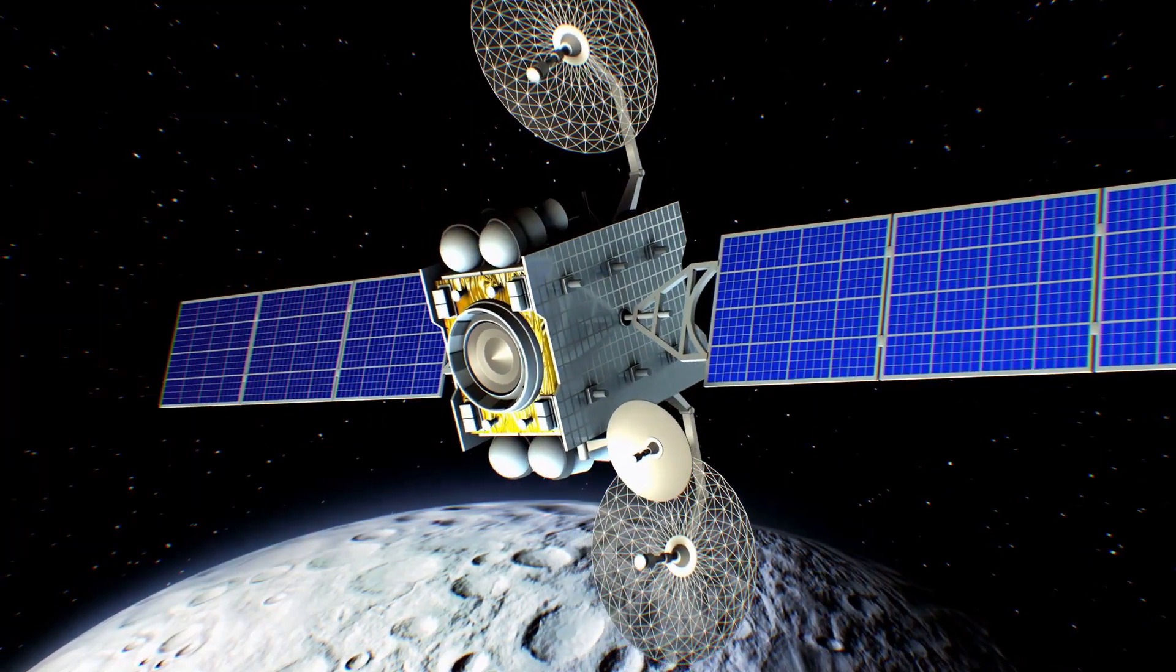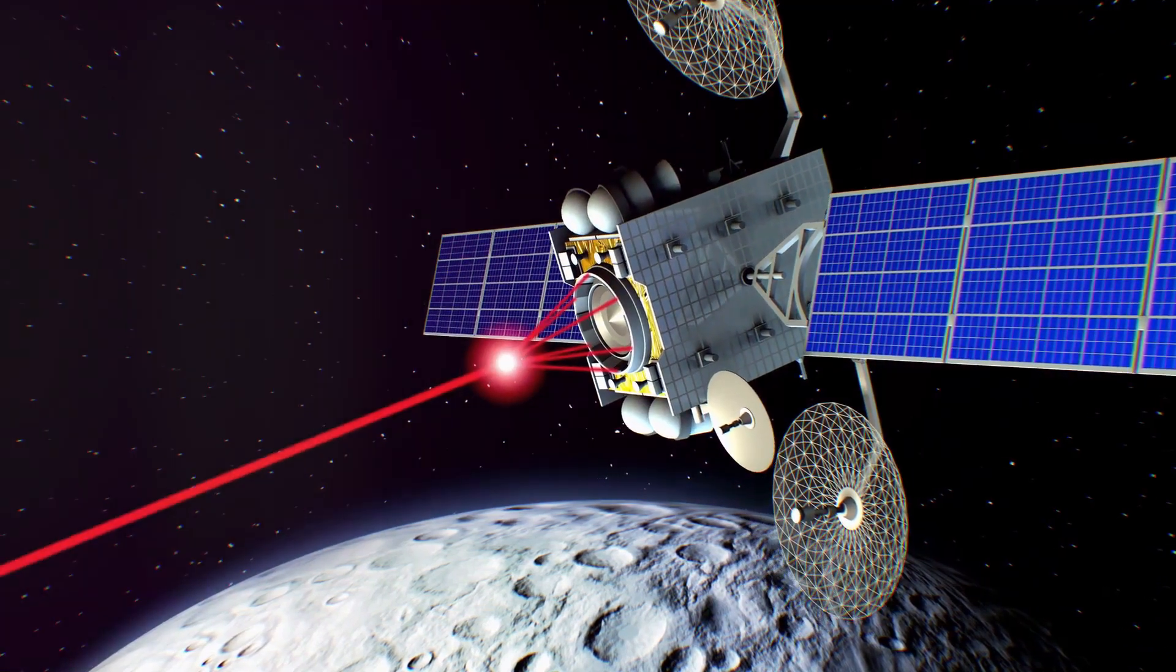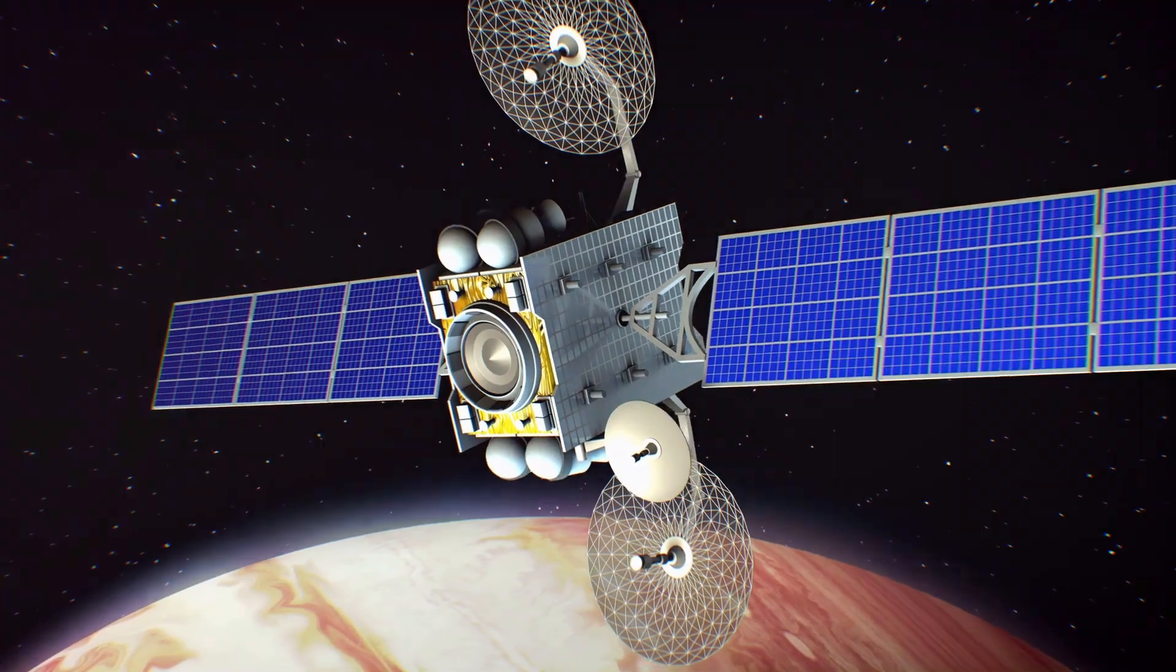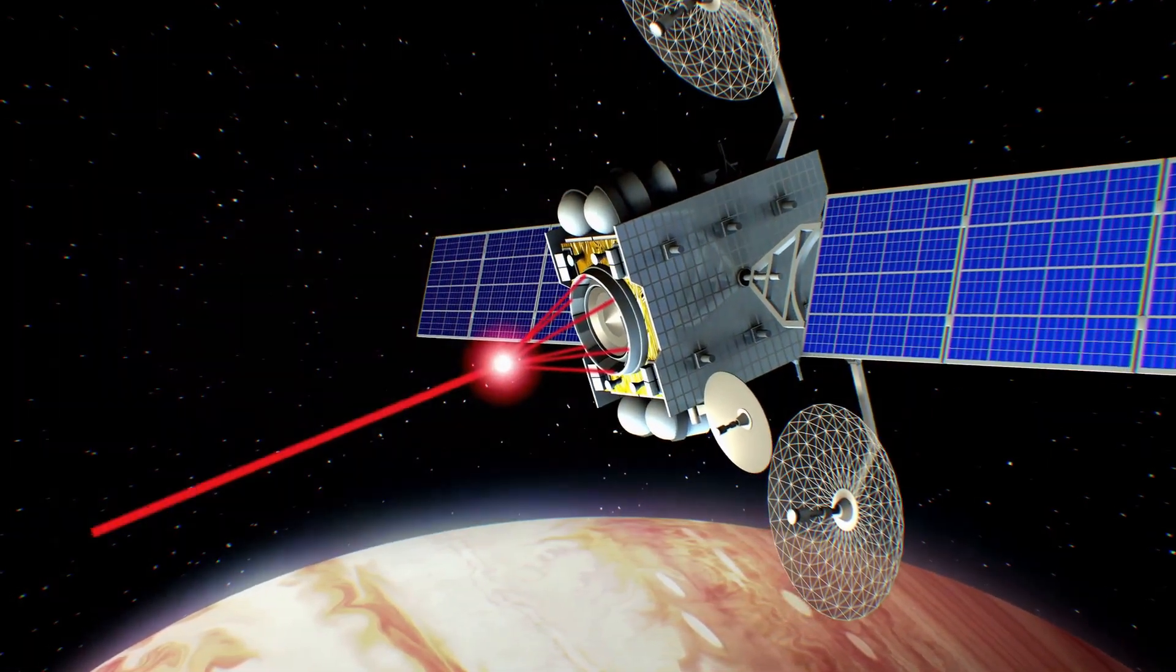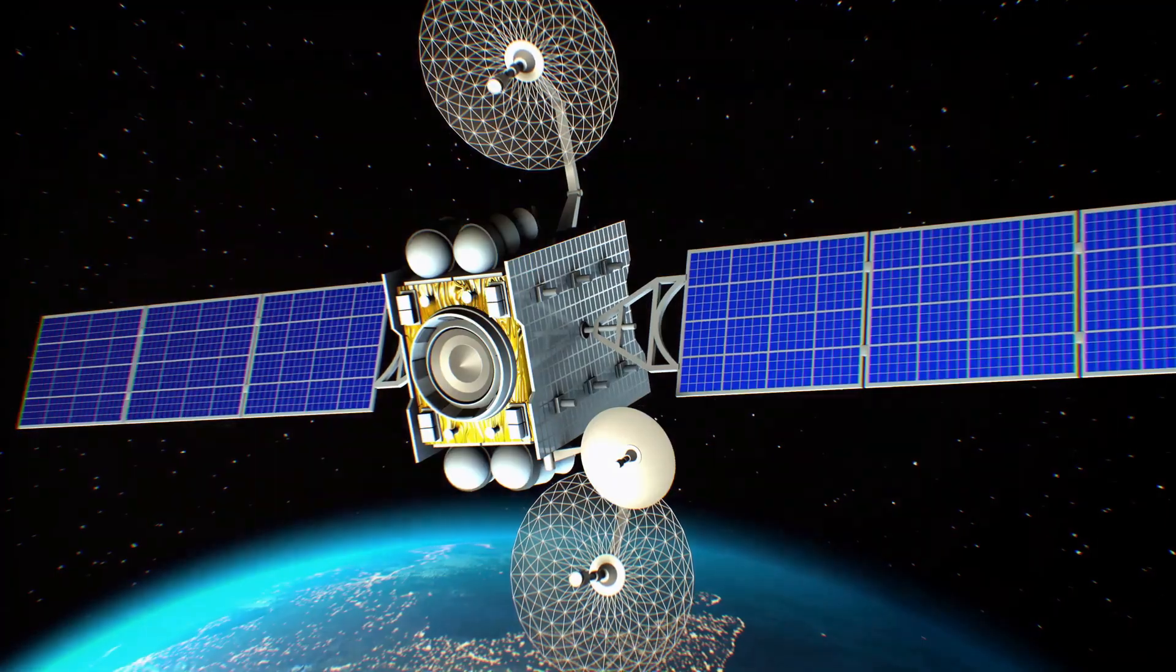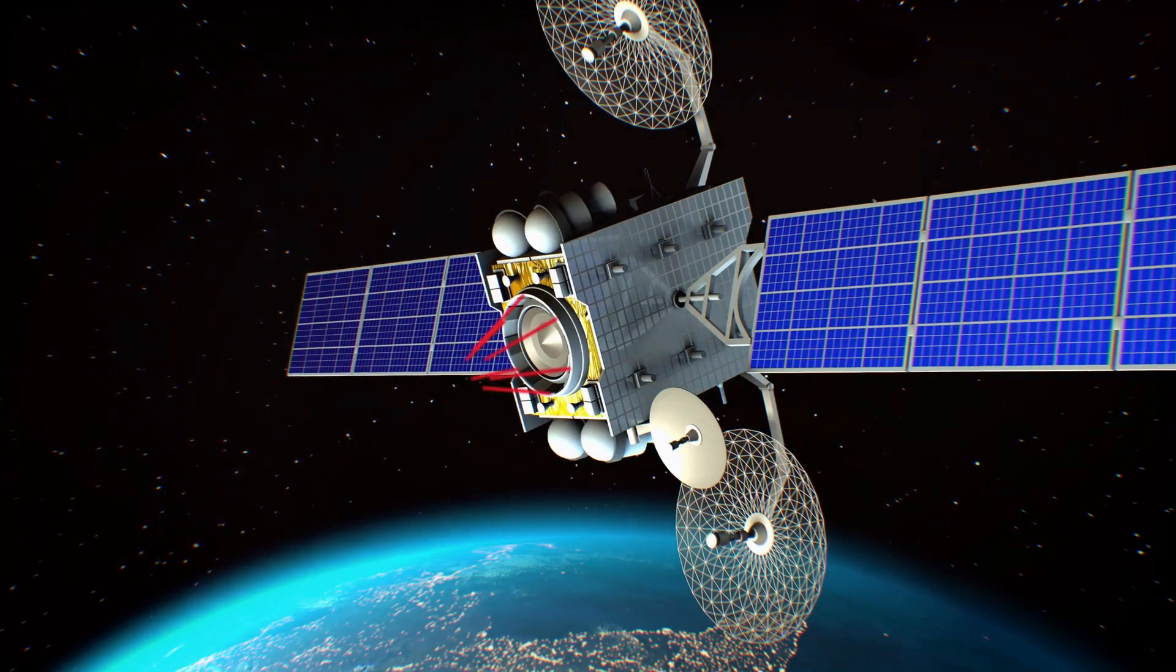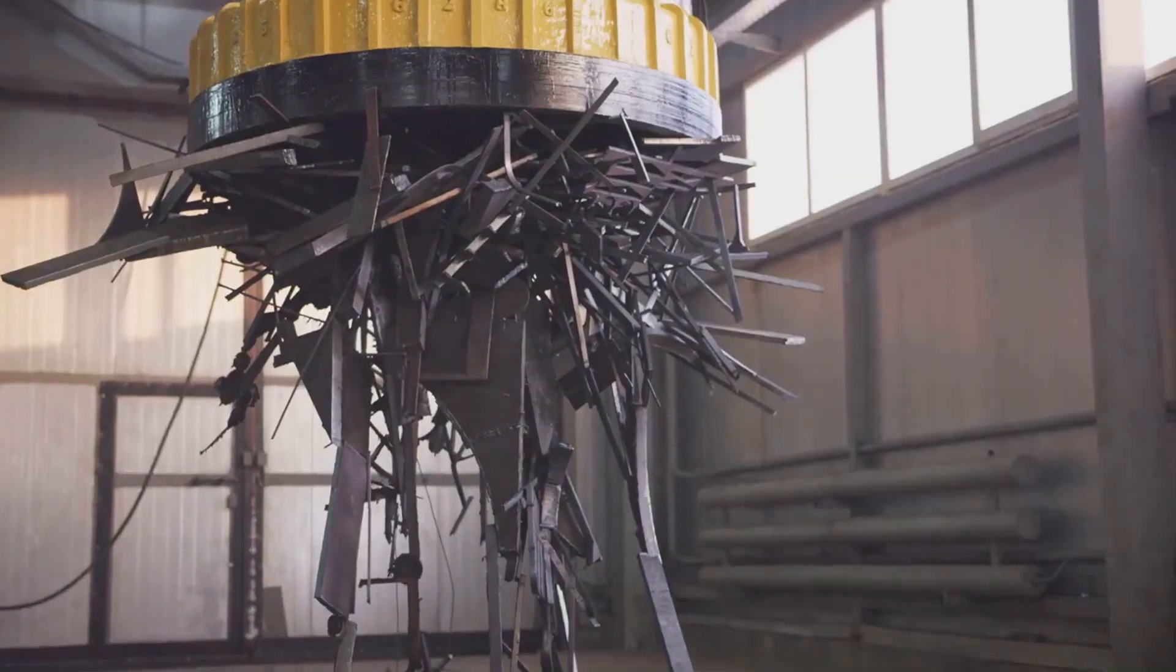Or consider laser systems, an idea that sounds straight out of a science fiction movie. These lasers wouldn't be used to blow up debris, that would only create more pieces to deal with. Instead, they could be designed to gently nudge objects, altering their orbits to avoid potential collisions. These lasers could be based on Earth or on platforms in space, providing a flexible solution to the space junk problem.